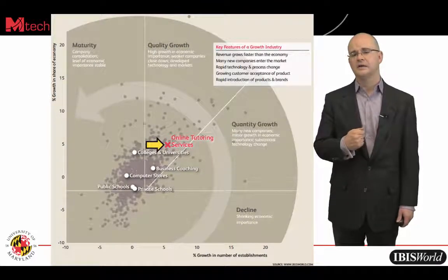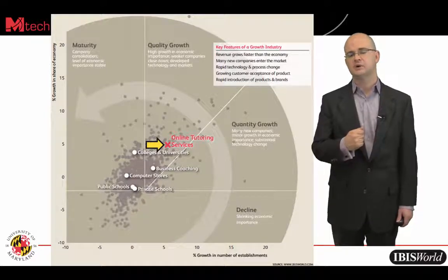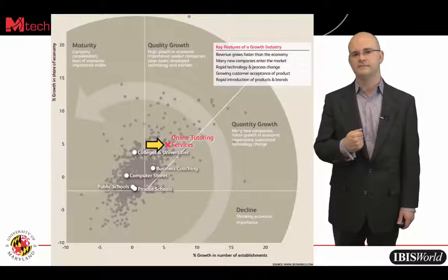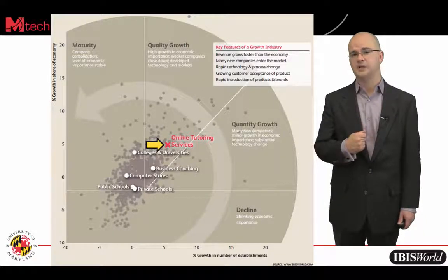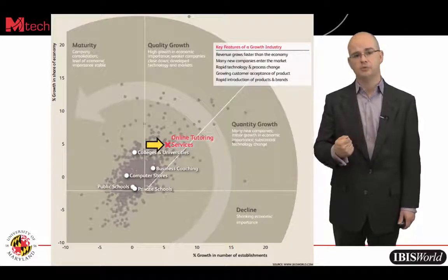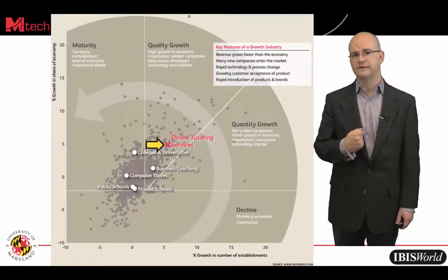Digging deeper, I can see that growth in establishments is around five percent and that the quality of growth is still strong — revenue is growing faster than the economy. There are still many companies in the space, rapid technology and process change, growing customer acceptance of online tutoring, and rapid introduction of new products and brands. All good signs for an entrepreneur confirming we are indeed in a growth phase.